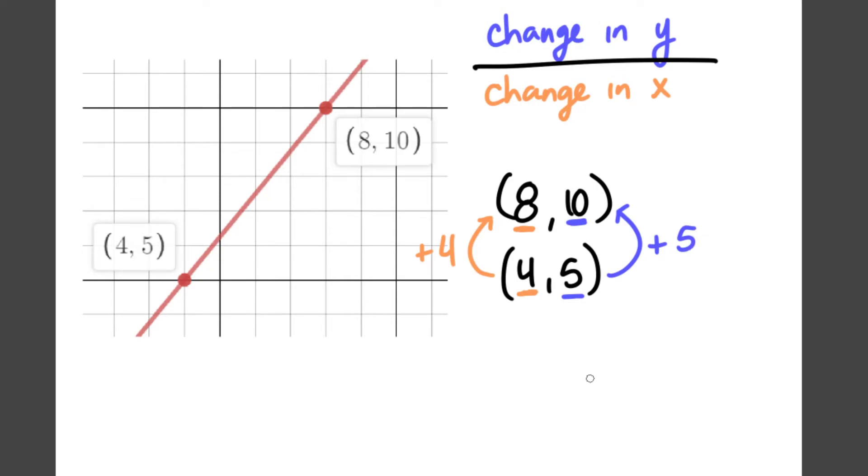Now I just put them into my ratio. Change in y was plus 5, over my change in x, which was plus 4. And that is my slope. 5 over 4.